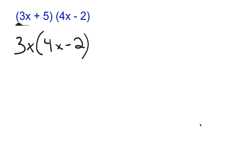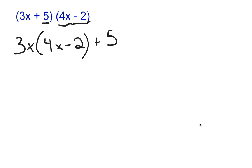Now we take the second part of that first binomial, the plus 5 — the sign goes with it — and multiply it by everything inside the second binomial, which is 4x minus 2.